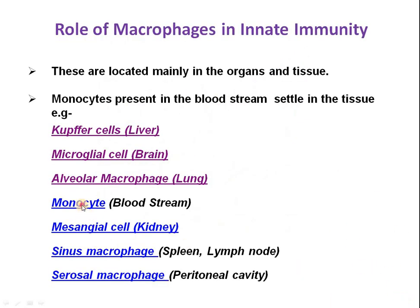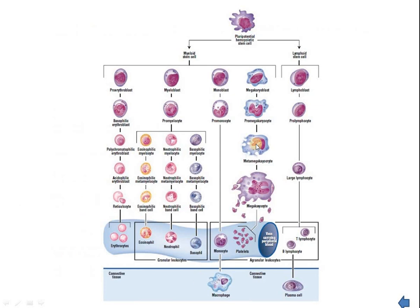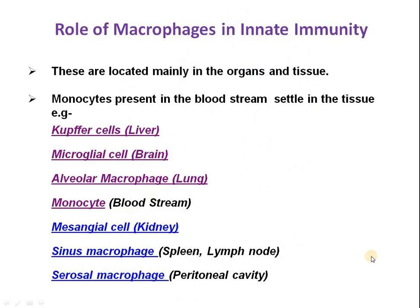Monocytes are also present within the bloodstream. Once monocytes come out from the bloodstream and enter the tissue space, they form macrophages with greater phagocytic activity. These macrophages formed from monocytes are also responsible for generating immunity within our body, especially innate immunity.